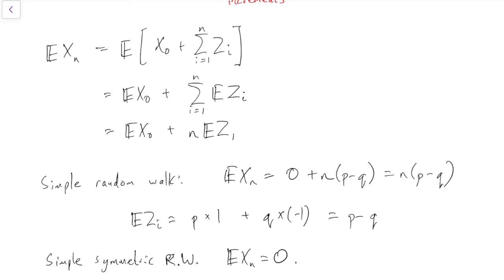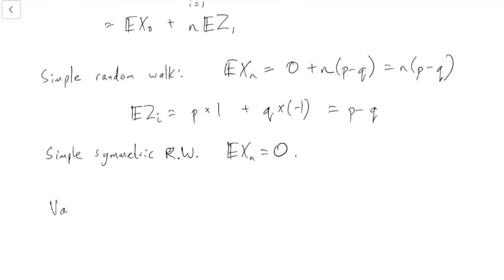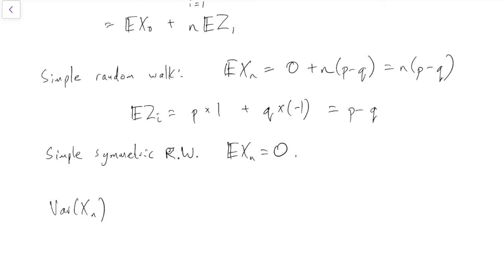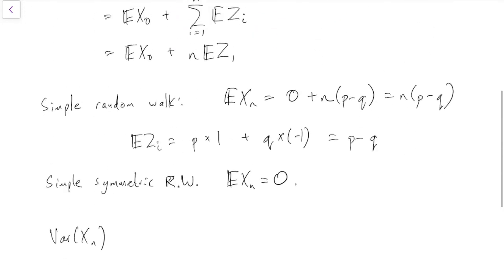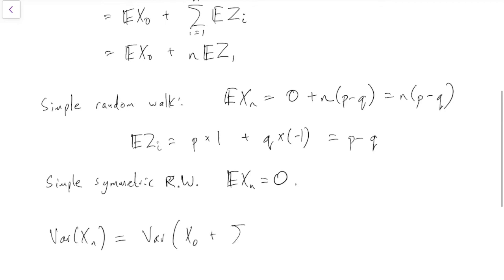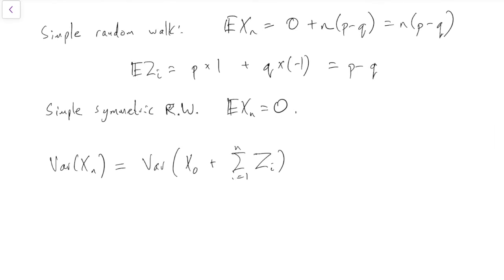Okay, that's expectation, but we can do just the same with the variance if we want to, the same way. What's the variance of Xn? Well, substitute in the red boxed formula at the top to get that it's the variance of X0 plus the sum from i equals 1 to n of Zi. And now we are going to use independence, because you need independence to be able to take a variance inside the brackets. That's variance of X0 plus n lots of the variance of Z1.